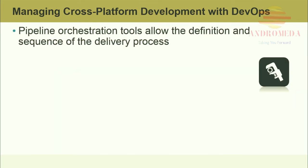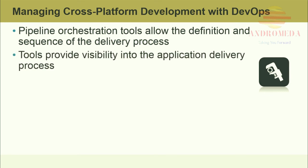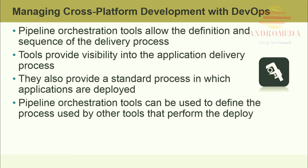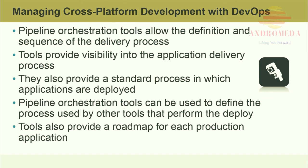Pipeline orchestration tools allow the definition and sequencing of the delivery process. Applications are developed and advanced through incremental stages of software development and deployment readiness. Pipeline tools provide visibility into the application delivery process, allowing development and operations staff to continually evaluate how software is promoted. They also provide a standard process for application deployment and can be used to define the process used by other tools that perform the actual deploy. Many pipeline tools feed into continuous delivery systems and provide a roadmap for each production application.